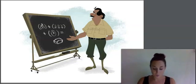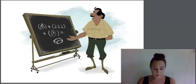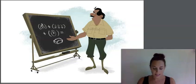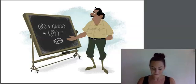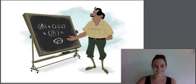Every rock in the world can be placed into one of three categories. The three types of rocks are igneous, sedimentary, and metamorphic. Try saying each of these rock types out loud: igneous, sedimentary, metamorphic.